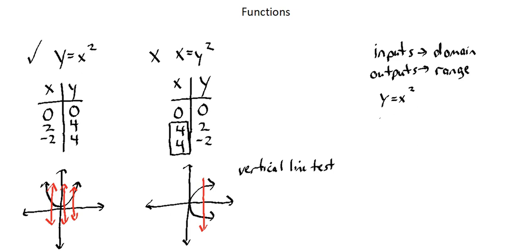And we'll continue to work with our identified function, y equals x squared. In function notation, we can write this as f of x equals x squared, or function f such that x maps onto x squared.